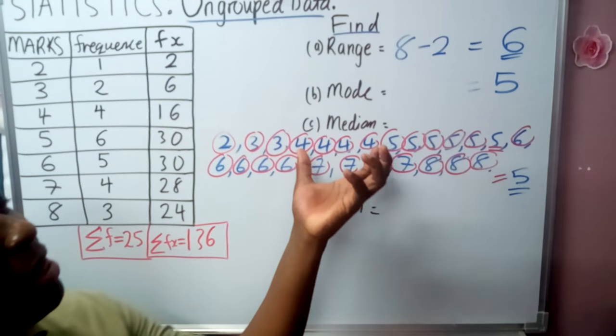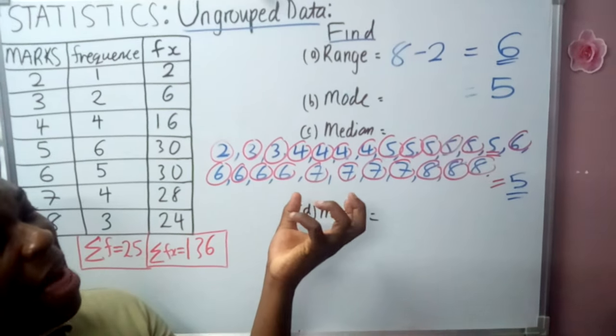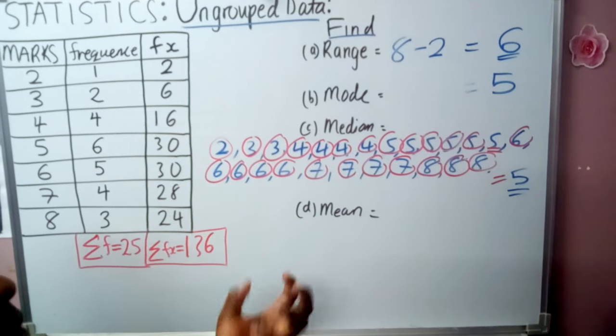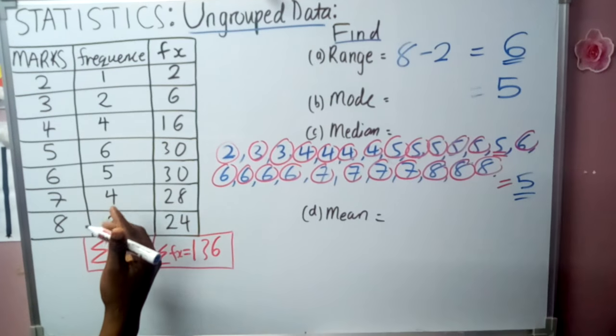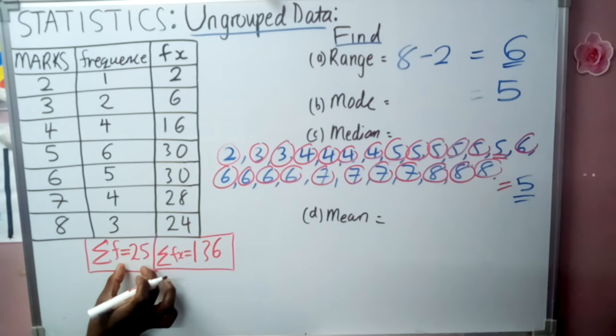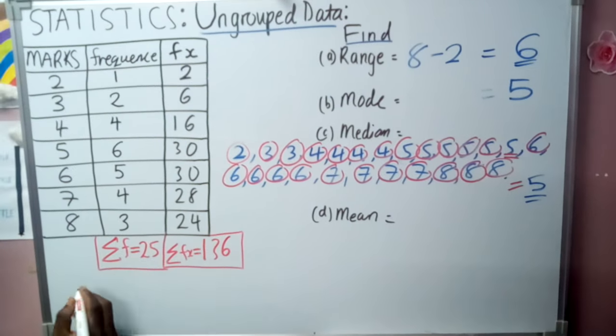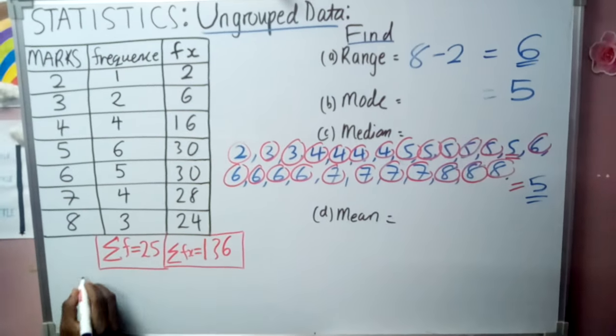However, we can find the median using another shortcut method. You take the sum of all the frequencies. And remember, our sum of the frequencies is 25. So we take 25, we divide by 2. This gives us 12.5.